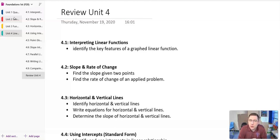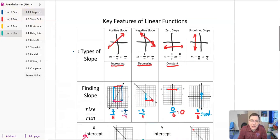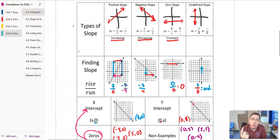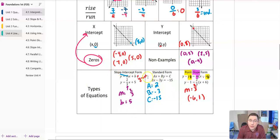And our objective there was to identify the key features of a graphed linear function. And remember our main key features are the slope, the intercepts, and what type of equation it's written in. The slope-intercept form, the standard form, or the point-slope form. So remember those three items there.